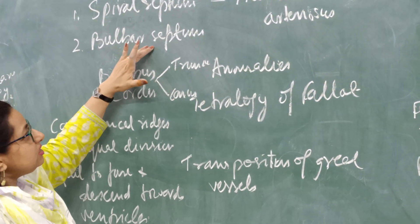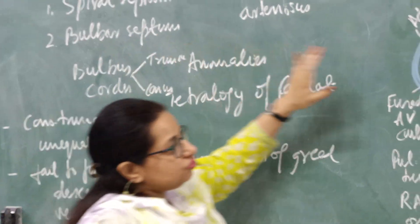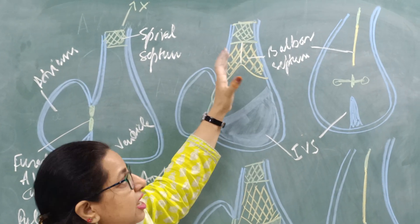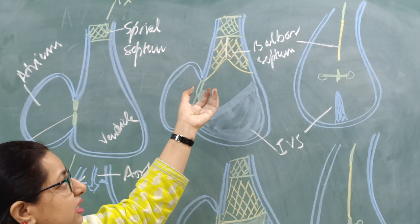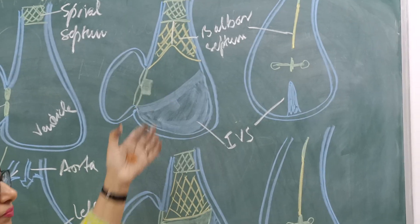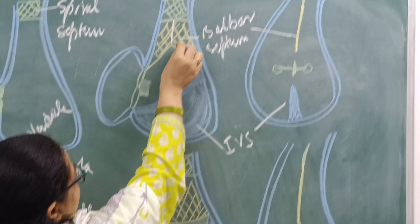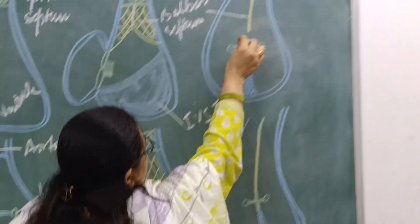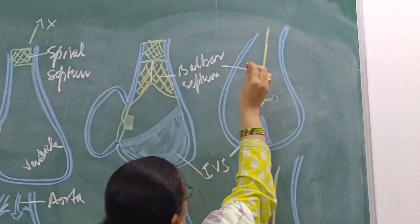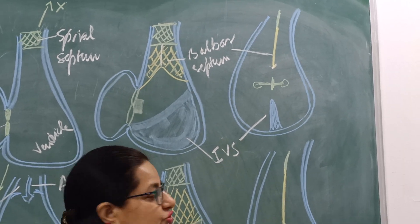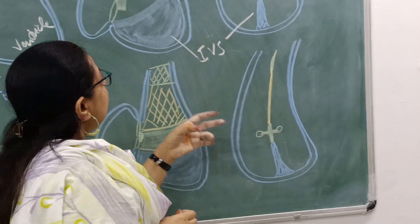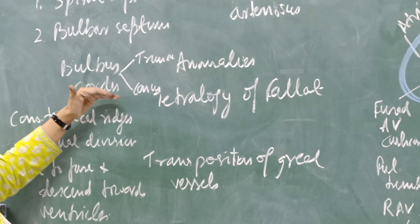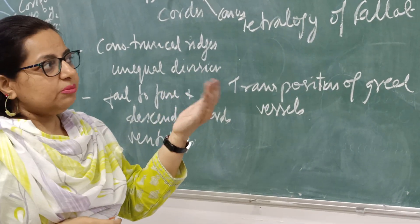Whereas in the conus there is appearance of right and left bulbar ridges, as you can see in this diagram. The right and left bulbar ridges come together and fuse with each other in the midline and grow downwards simultaneously. This is how the bulbar ridges form the bulbar septum, which is growing down towards the AV cushions. So the bulbar septum is present in the conus and that is how it is formed.